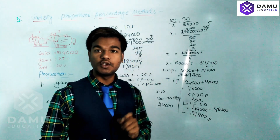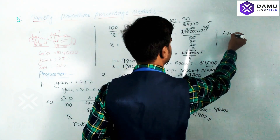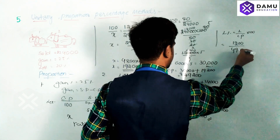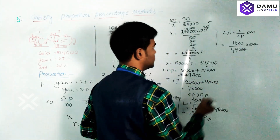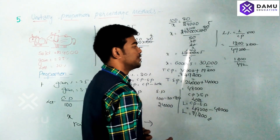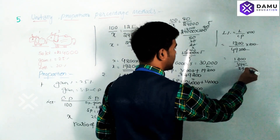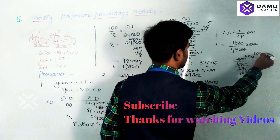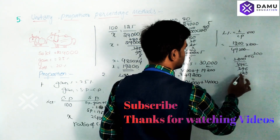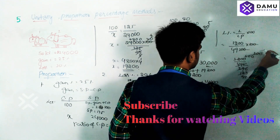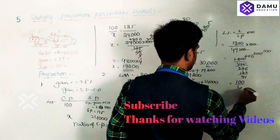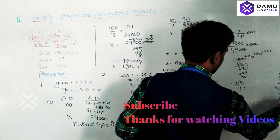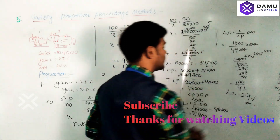Now we calculate the loss percentage. Loss percentage equals loss divided by cost price multiplied by 100. That is 1,200 divided by 49,200 multiplied by 100. Simplifying, 1,200 divided by 492 gives approximately 2.44%. So the final loss percentage is approximately 2.44%.